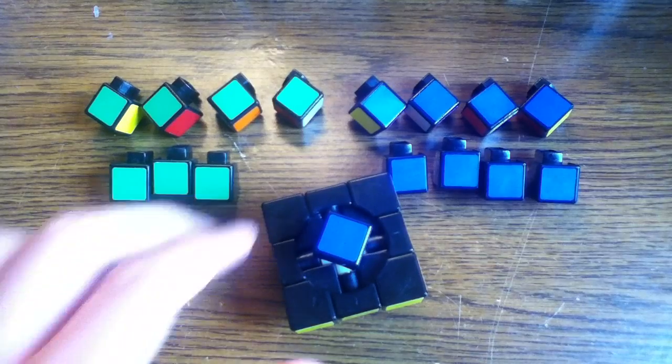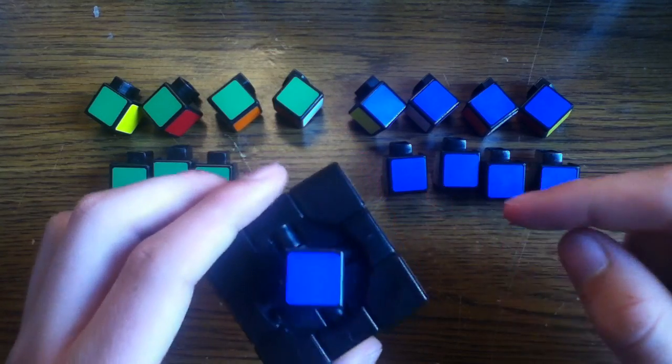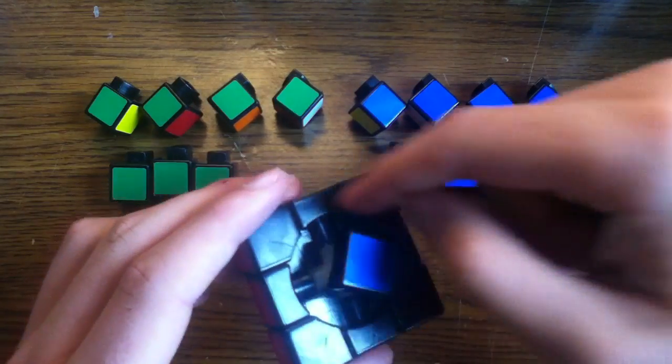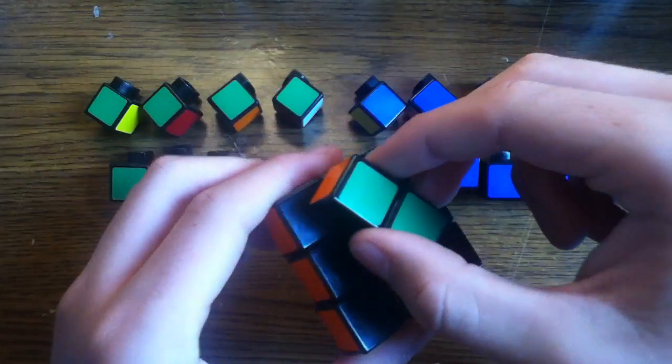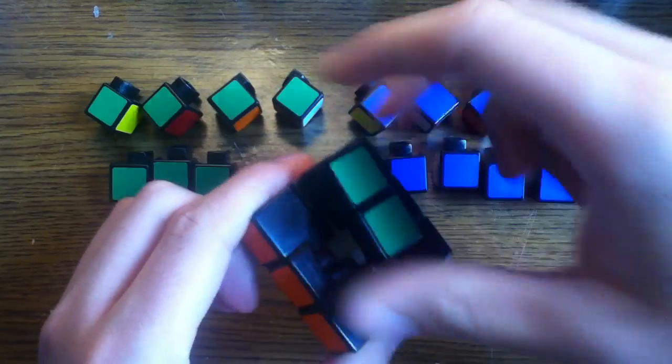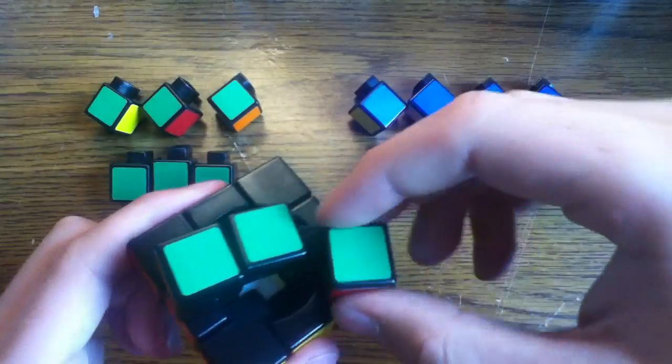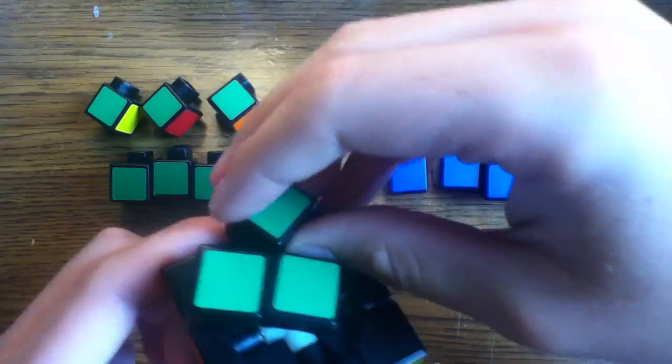When the cube is assembled, the edge pieces and the middle pieces work together to form a track, which the other edge and corner pieces can glide along. The corner pieces will glide along the same track just like this edge piece does.